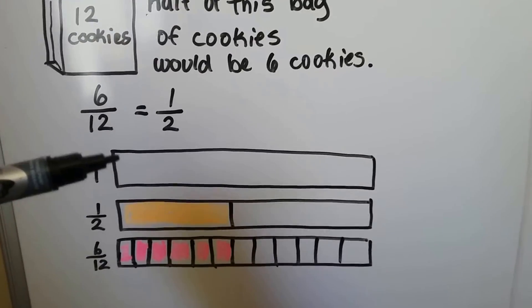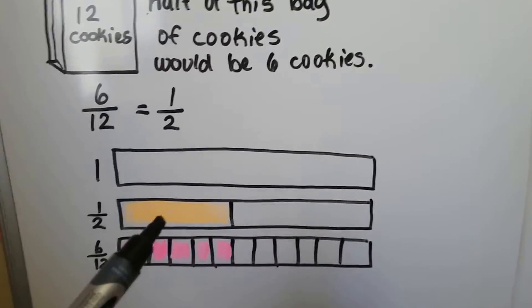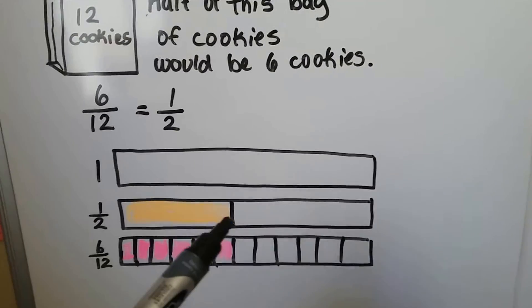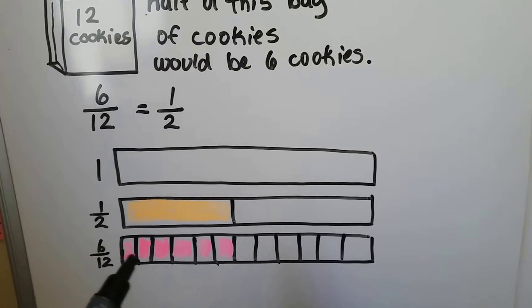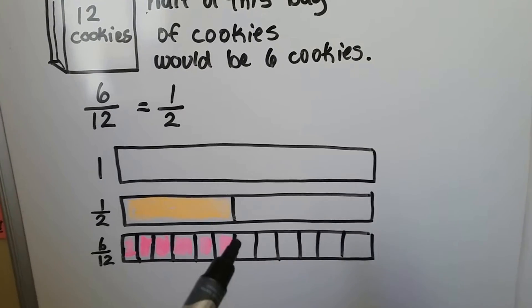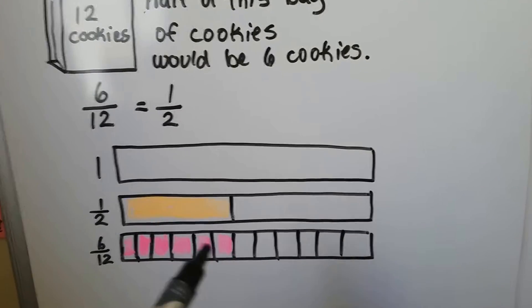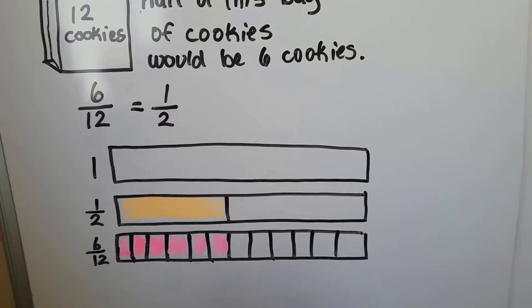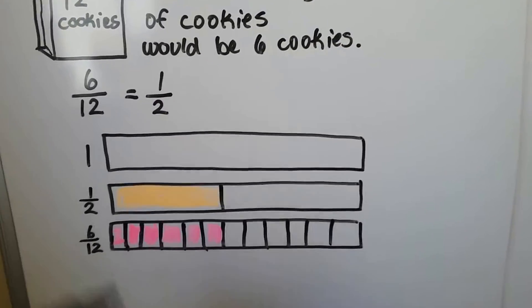If this is one full, whole bar, then this is half the bar. And if the bar is split into twelve pieces and we have six of them, it's the same thing as a half. So one half is equivalent to six twelfths and vice versa.